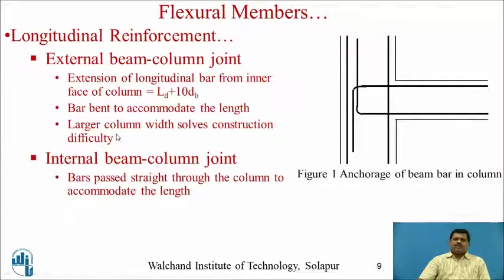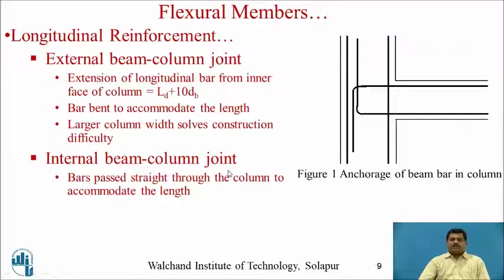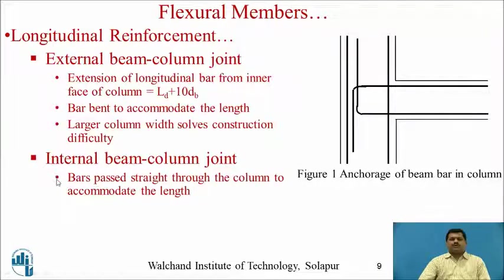For an internal beam-column joint, bars pass straight through the column to accommodate the required anchorage length. This is the most important provision for internal beam-column joints.